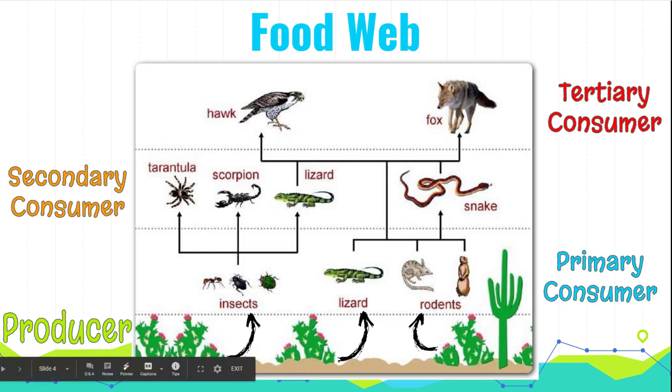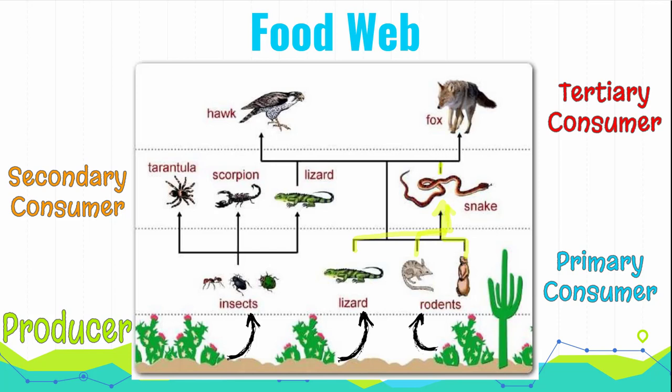When we look at this food web, we have a lot of different relationships we can talk about. The snake eats the lizard, shown by this arrow, the different rodents, shown by this arrow. The snake is eaten by a fox and can also be eaten by the hawk. There's insects are eaten by tarantulas, scorpions, and lizards. And this lizard can be eaten by the hawk or the fox. Just like this lizard here is eaten by the hawk and by the fox.